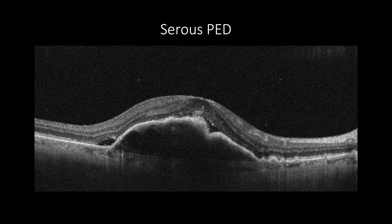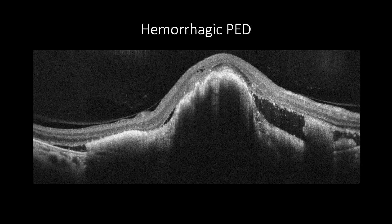Serous PED shows elevated RPE with smooth or corrugated borders with clear fluid, giving a homogeneous content of the PED. In contrast, hemorrhagic PED contains blood and will show increased reflectivity below the elevated RPE, then hyperreflectivity due to signal blockage from the blood.